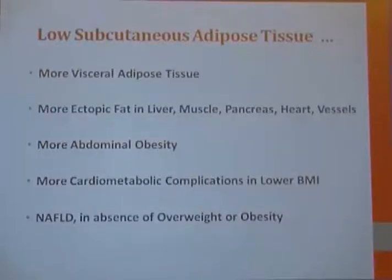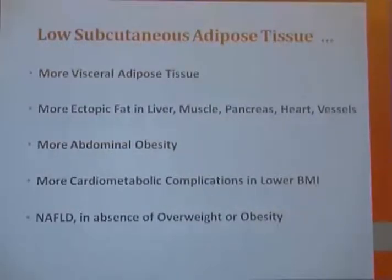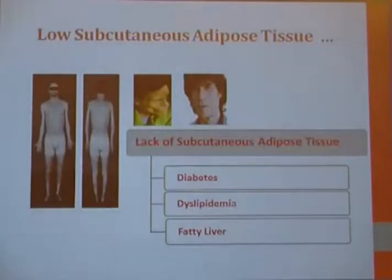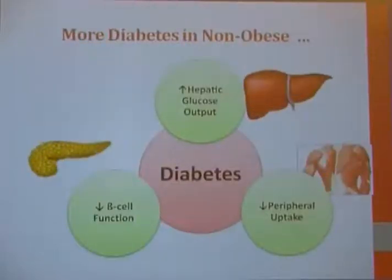As subcutaneous tissue is low in India, more ectopic fat and visceral fat accumulates, leading to more abdominal obesity, more cardiometabolic complications at lower BMI, and NAFLD even in the absence of overweight or obesity. Patients in the overweight category may not have increased waist circumference but may still have ectopic fat and related cardiometabolic discrepancies. This resembles a lipodystrophy patient who has diabetes, dyslipidemia, and fatty liver due to inadequate subcutaneous storage space — any fat stored goes to visceral depots.